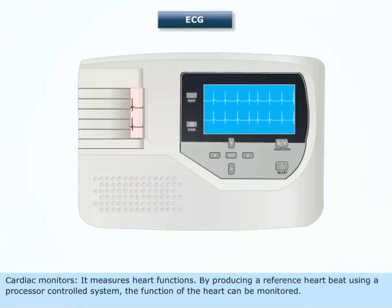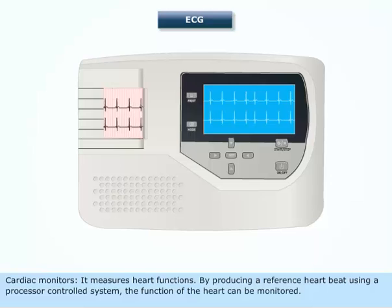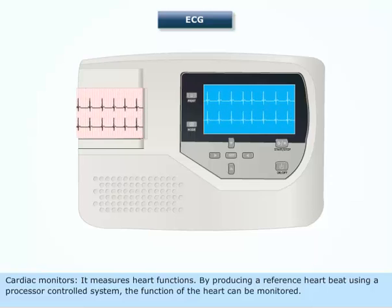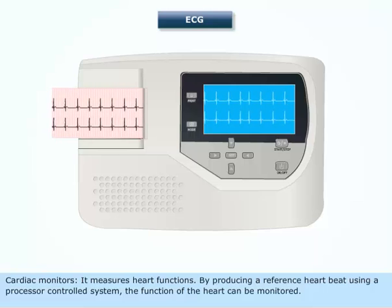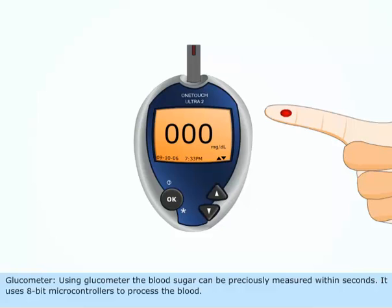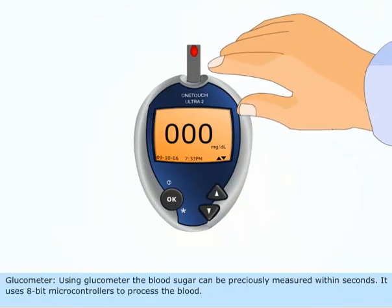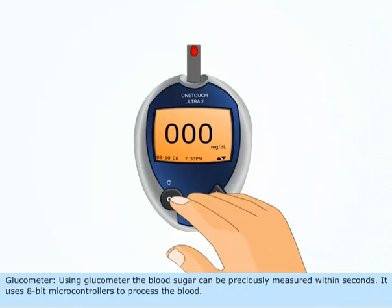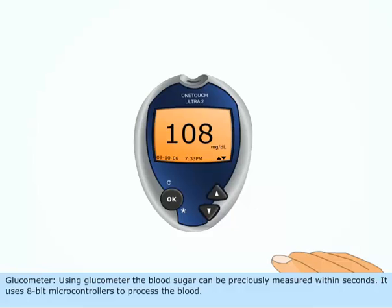Cardiac monitors measure heart functions by producing a reference heartbeat using a processor-controlled system, allowing the function of the heart to be monitored. Glucometer: using a glucometer, blood sugar can be precisely measured within seconds, and it uses 8-bit microcontrollers to process the blood.